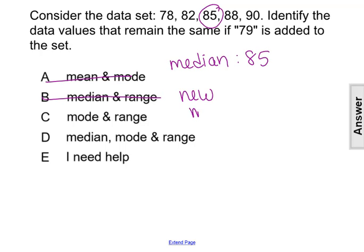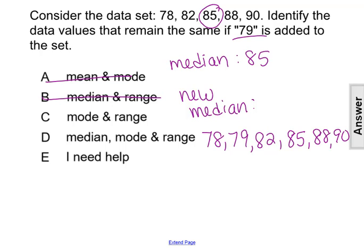Let's see what happens, if the new median is 85 as well or if it changes when we add 79. That would mean 78, then 79 would go right after 78 and before 82 in numerical order. Now when we have our list, we have six numbers. So we're going to have to take the mean of the middle two numbers, which is 82 and 85. If we add and find the sum of 82 and 85, it's 167. If we divide that by two, the new median is actually 83.5.